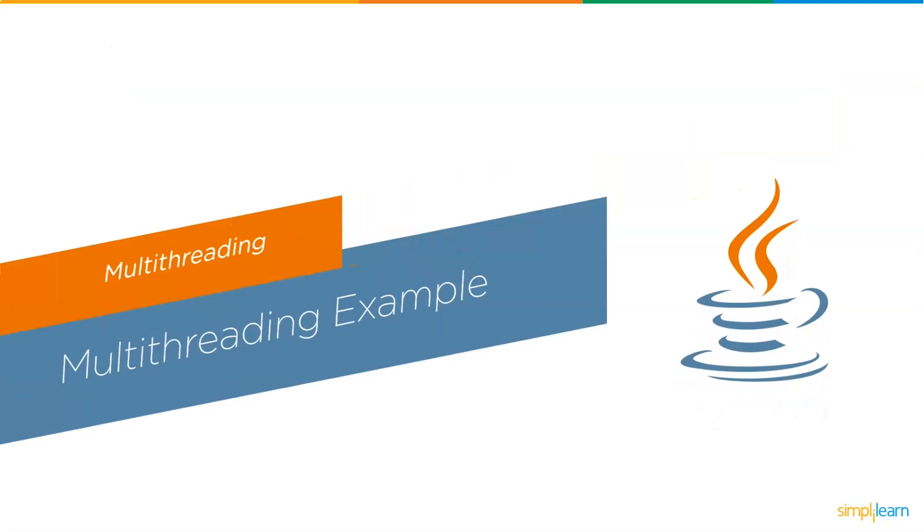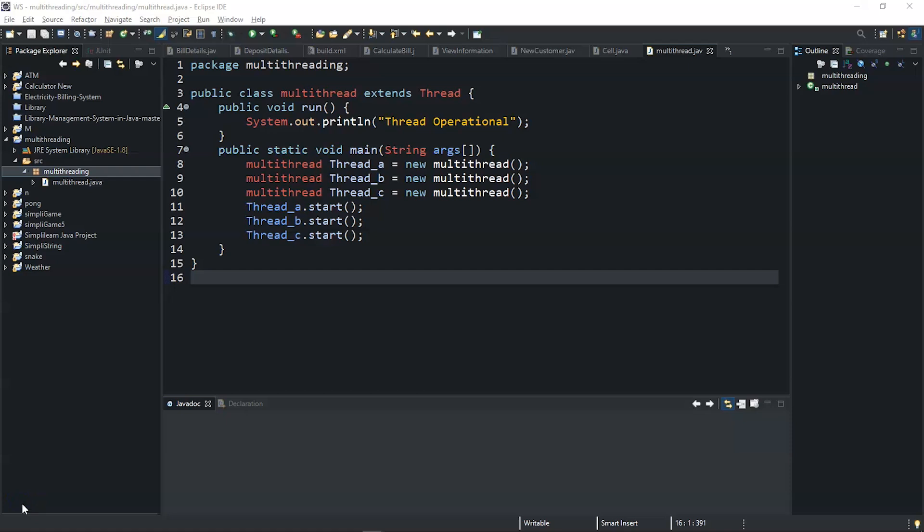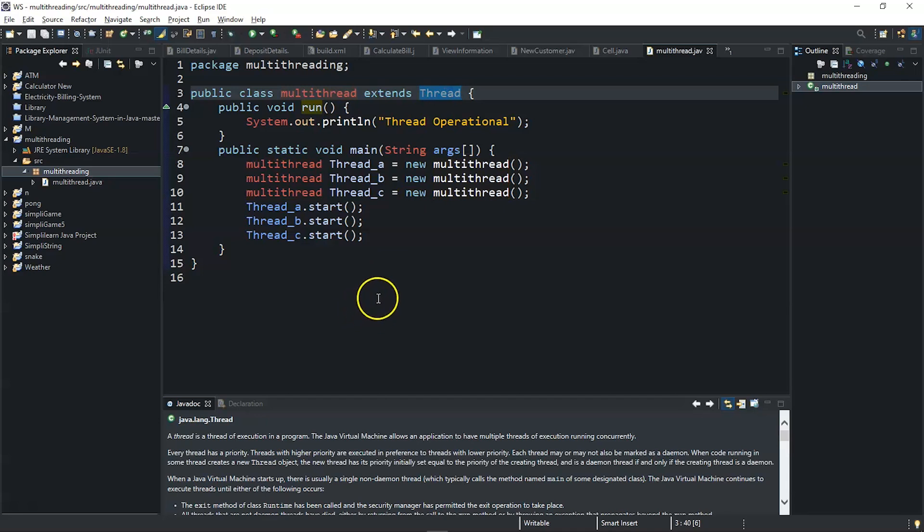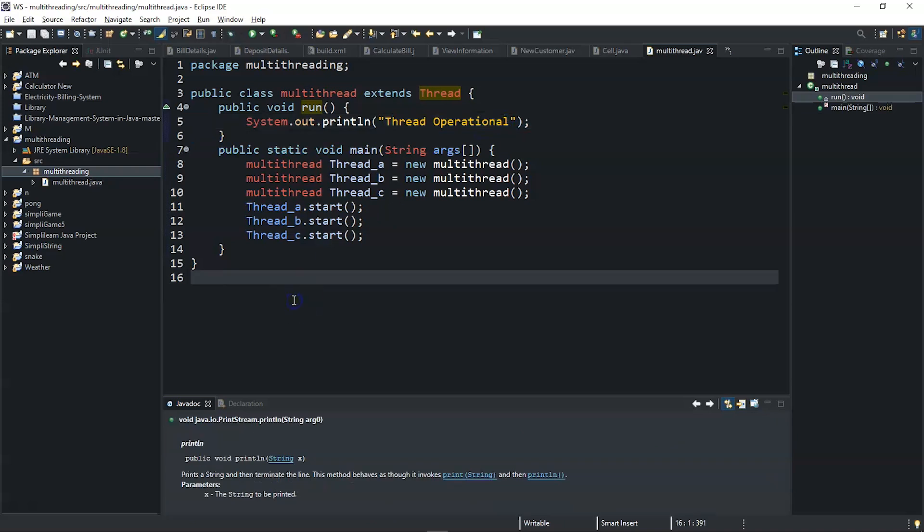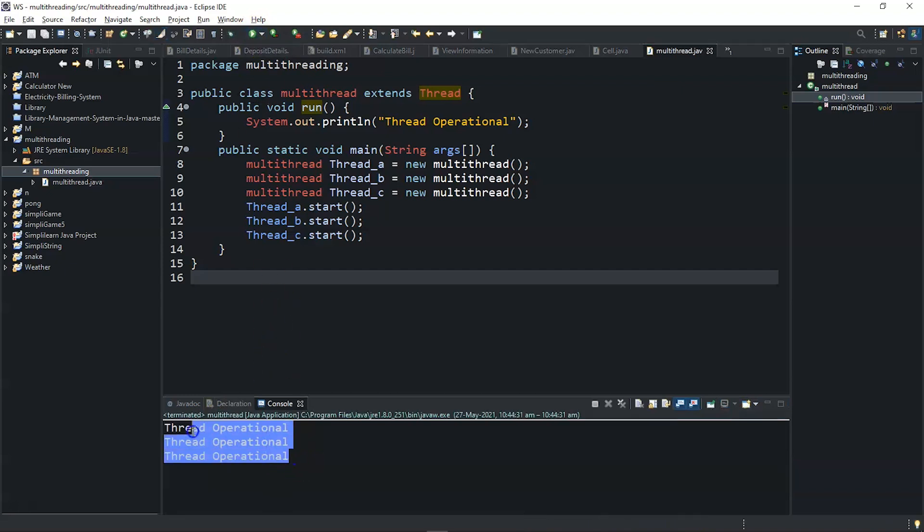Now that we have understood a thread and what is its life cycle, let us execute a simple program based on multi-threading. As you can see on my screen, we have a simple program for multi-threading. Here, my class is multi-thread and we are extending the thread class to create threads into our program. We are going to create three simple threads: thread A, thread B, and thread C. All those threads will be executing one single message, printing the thread is operational message onto the print console. Now let us directly execute this program and see the output. As you can see, the program got successfully executed and all these three threads are activated and they are executing the job of printing a simple message.